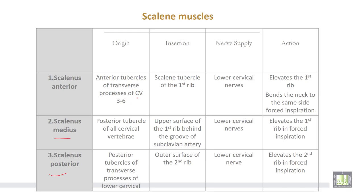Scalene anterior takes origin from the anterior tubercle of transverse processes from C3 to C6, inserted into the scalene tubercle of the first rib. Nerve supply from lower cervical nerves. Action: elevation of the first rib and bends the neck to the same side, used in forced inspiration. Scalene medius takes origin from the posterior tubercle of all cervical vertebrae, inserted into the upper surface of the first rib behind the groove for the subclavian artery. Nerve supply from lower cervical nerves; elevates the first rib and forces inspiration. Scalene posterior takes origin from the posterior tubercle of transverse processes of the lower cervical vertebrae, inserted into the upper surface of the second rib; nerve supply from lower cervical nerves, elevates the second rib and forces inspiration.